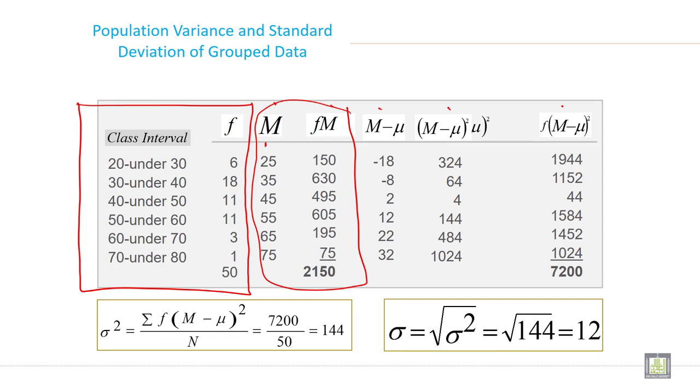After this start M minus μ, midpoint minus average. When you have calculated average so just deduct it from midpoint. So this is calculated midpoint minus μ. Then midpoint minus μ whole square, just -18 into -18, then -8 into -8, then 2 into 2, then 12 into 12 and write here. So this will be the square of M minus μ.